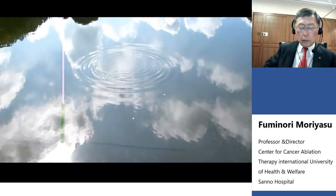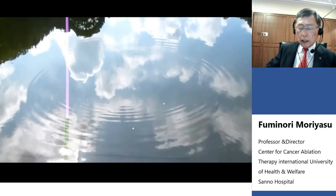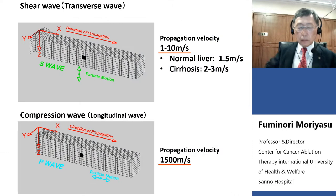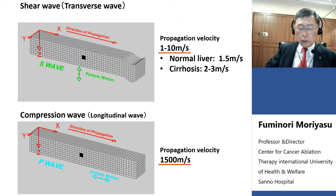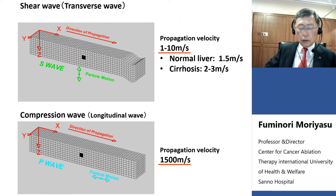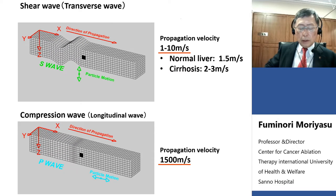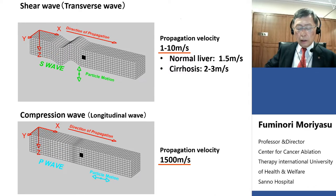If you throw a small stone onto a pond, transverse waves arise and propagate. A mechanical vibrator or ultrasound push pulse makes shear waves in the liver. The propagation speed of shear waves is very slow — 1 to 10 meters per second. Therefore, propagation speed can be measured using compression waves like ultrasound, because ultrasound propagation speed is much higher than shear wave speed.